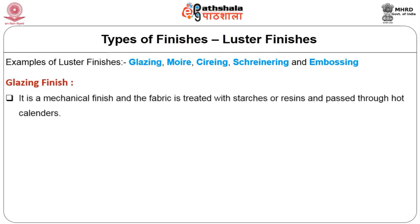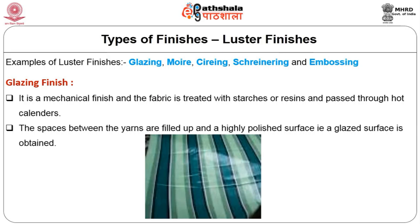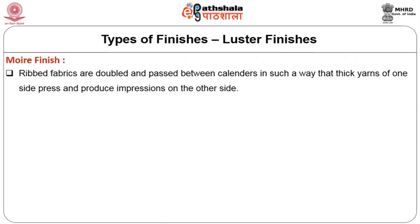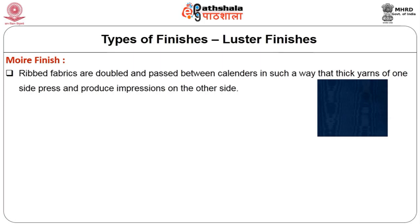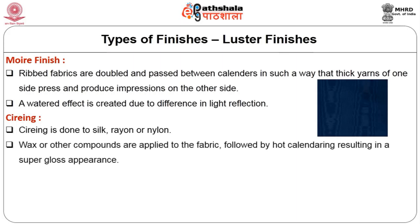In glazing, the fabric is treated with starches or resins and passed through hot calendars; spaces between yarns are filled up producing a highly polished glazed surface. In moiré finish, ribbed fabrics are doubled and passed between calendars so that thick yarns of one side press impressions on the other, creating a watered effect due to differences in light reflection. Schreining is done to silk, rayon or nylon — wax or compounds are applied followed by hot calendaring, resulting in a super gloss appearance.